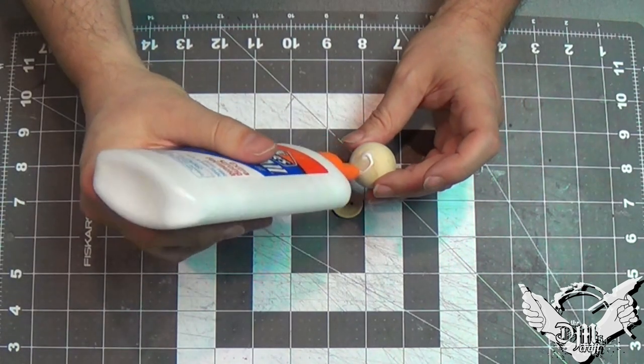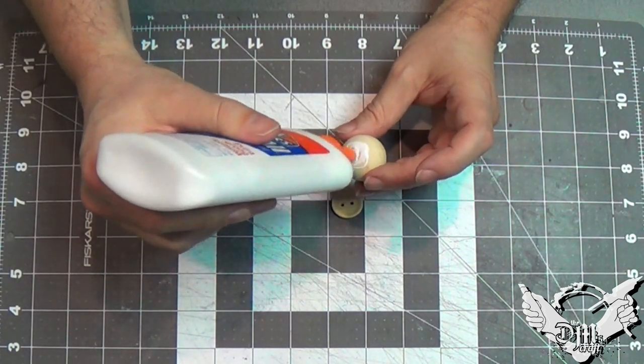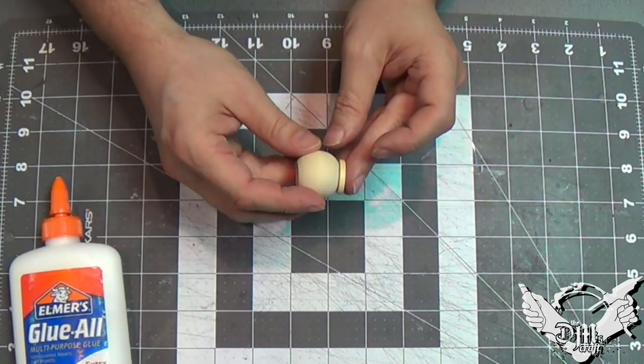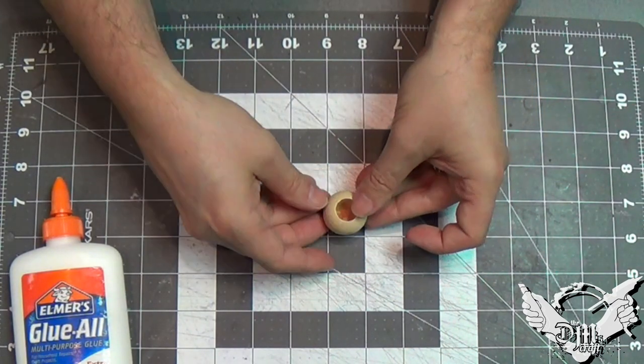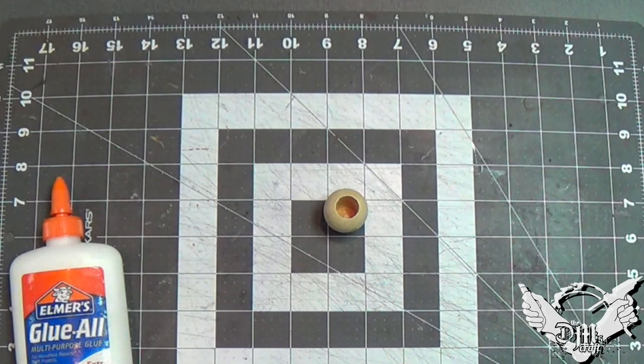Now, I'm just going to glue it to a wooden button I had. You could really use anything that would make a nice base for this. So, let's glue that on and perfect base. Easy to do.